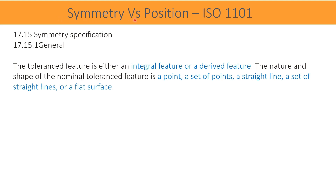Let us see what is written in ISO 1101 about symmetry and position. Regarding symmetry specification, the tolerance feature is either an integral feature or a derived feature. An integral feature is a feature like a plane or cylinder, while a derived feature is constructed from two or more different features — for example, a line at the intersection of two perpendicular surfaces. The nature and shape of the nominal tolerance feature could be a point, a set of points, a straight line, a set of straight lines, or flat surfaces. In ISO, symmetry is recommended for features like points, holes, surfaces, and slots.